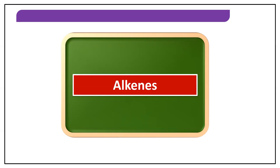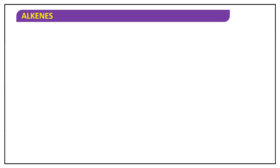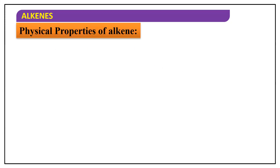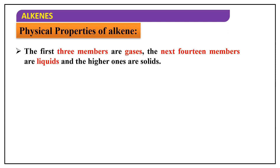Namaste. In the previous class we looked at the various methods of preparation of alkenes. In today's class we'll continue further — post the preparation, we will be focusing on the properties. When we talk about properties, we'll be primarily focusing on two kinds: physical properties and chemical properties. Let's have a look at some of the physical properties of alkenes first.